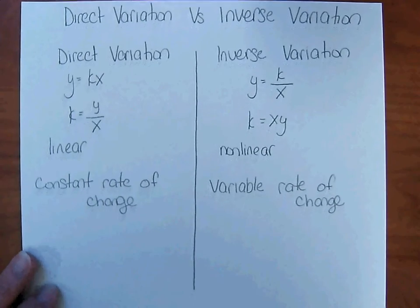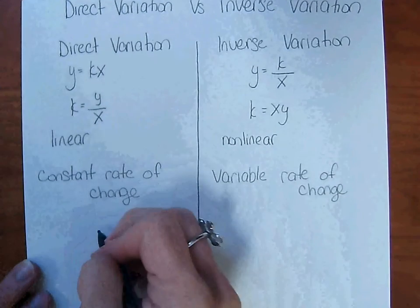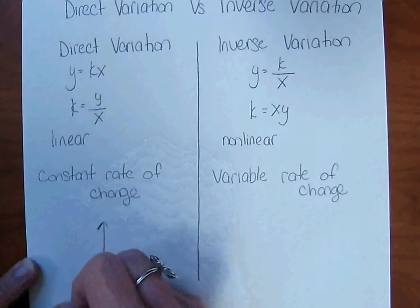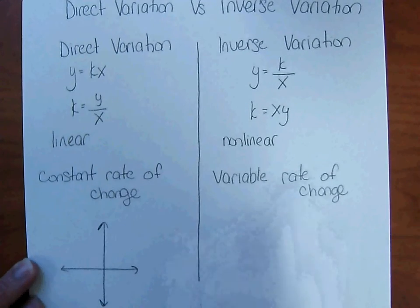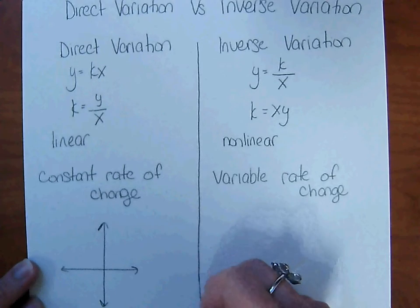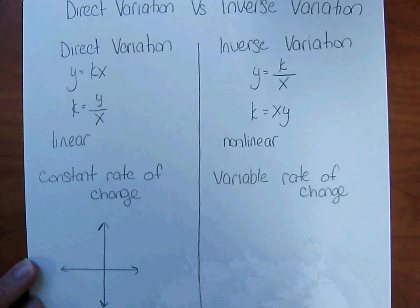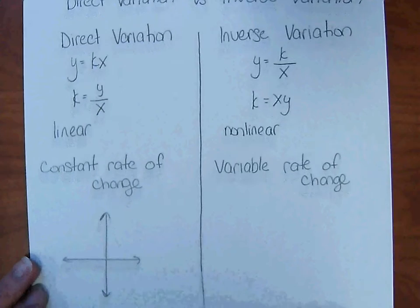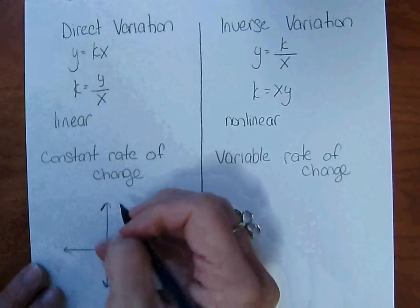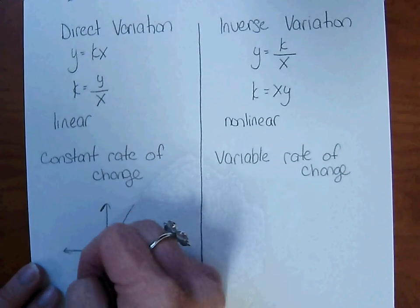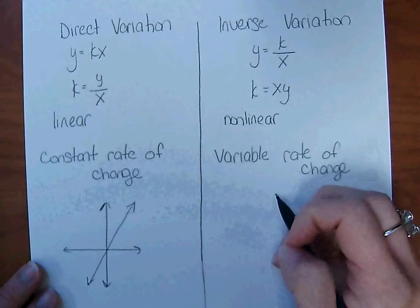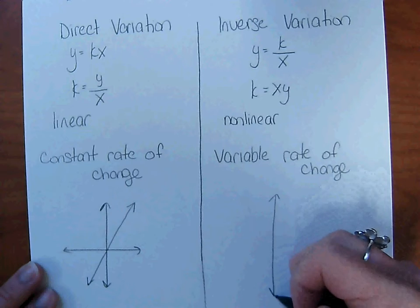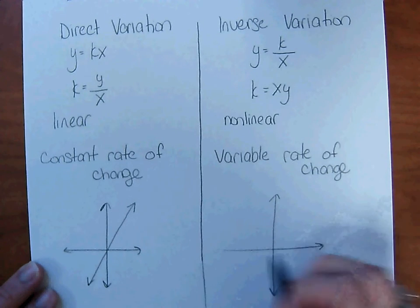The graph for direct variation. Hopefully you recognize the form y equals kx. That tells you that it is going to be a straight line through the origin. Inverse variation in quadrant 1 looks like an L.